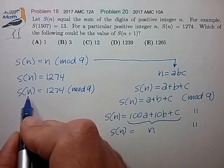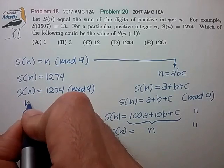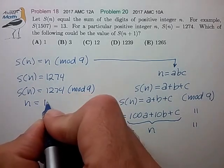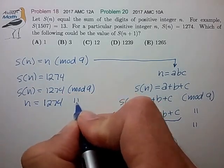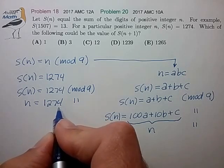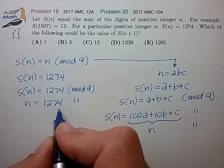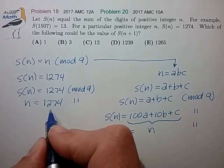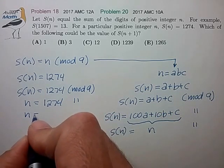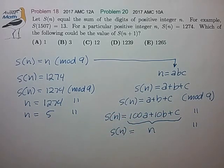We know that S(n) is equal to 1274 in mod 9. But now we know that S(n) is just equal to n in mod 9. From which we can reduce 1274 in mod 9 by dividing 1274 by 9. Just keep the remainder to find that n is equal to 5. Again in mod 9.